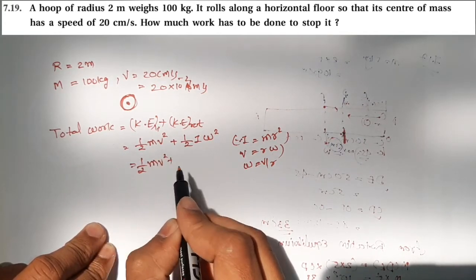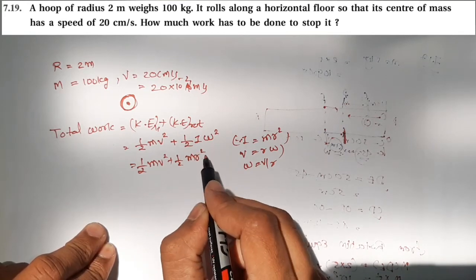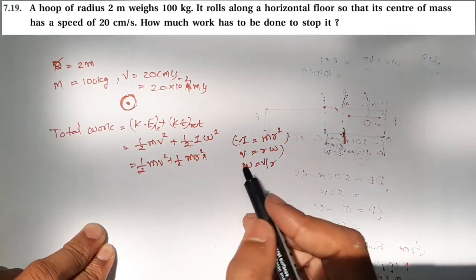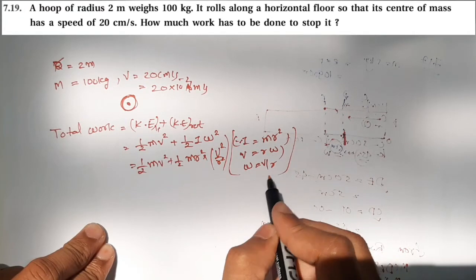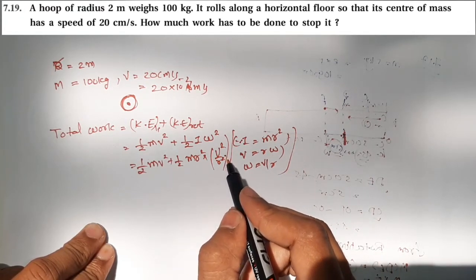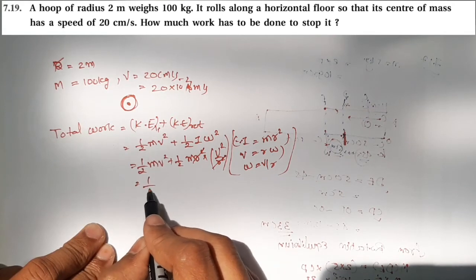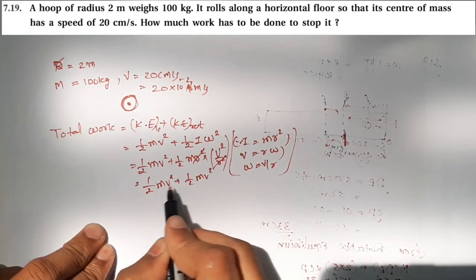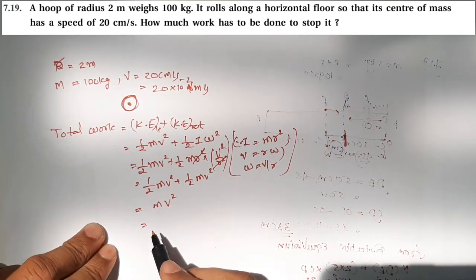One half, I equals mr squared, and omega equals v by r. So v squared by r squared. When we substitute, mr squared cancels with r squared to give one half mv squared plus one half mv squared, which equals mv squared.